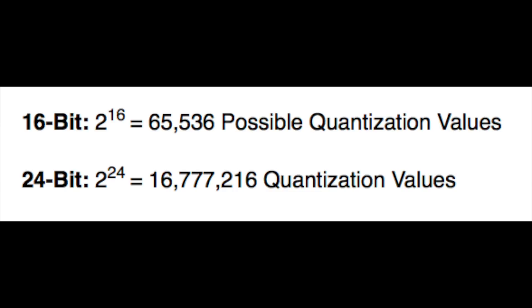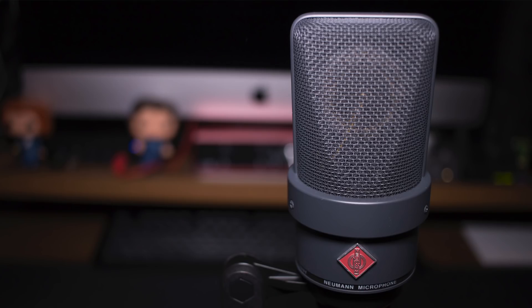But once we jump up to 24 bit and take two to the 24th power, we get 16.7 million possible values that your analog signal can be quantized to. So to put this into perspective, you can think of the accuracy of an image with 65,000 total pixels versus the accuracy of an image with 16.7 million pixels — the latter is going to be much more accurate.